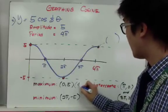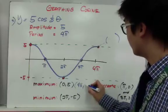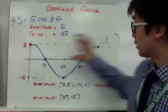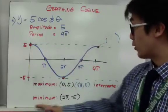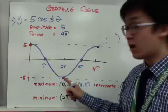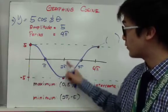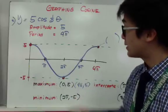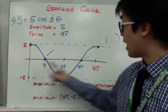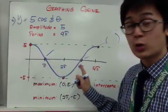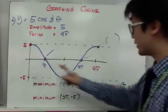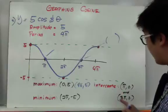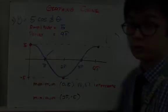The maximum points of the cosine function are at (0, 5) and (4π, 5). The minimum point is at (2π, −5). The intercepts are at (π, 0) and (3π, 0). These are the key points needed to graph y equals 5 cosine one-half theta, completing our example of graphing a cosine function.